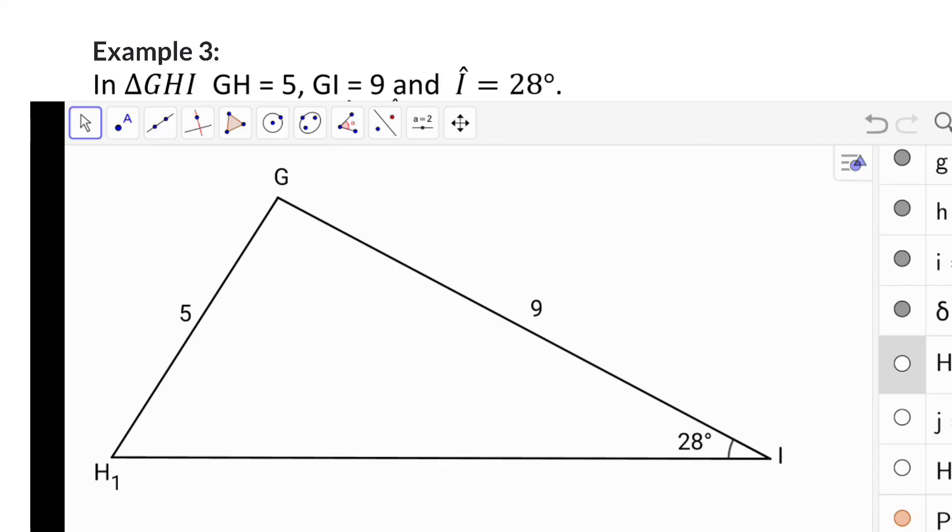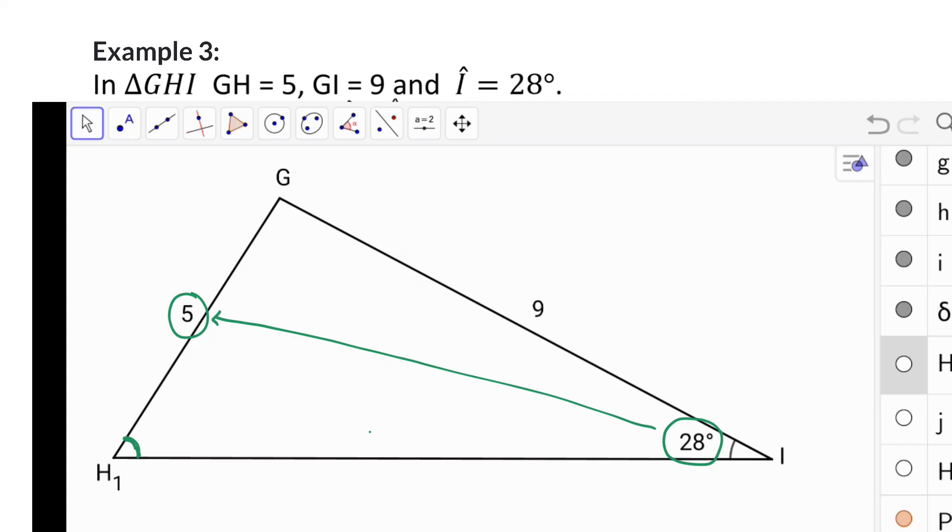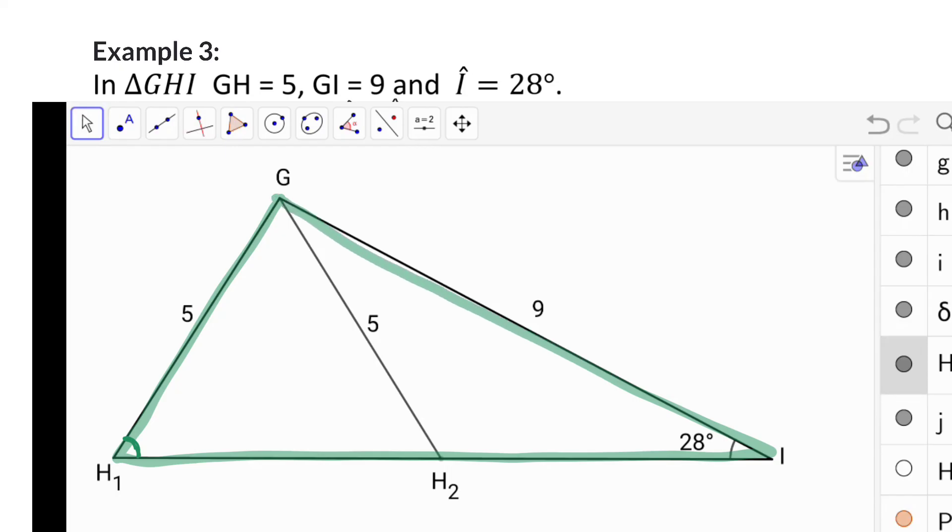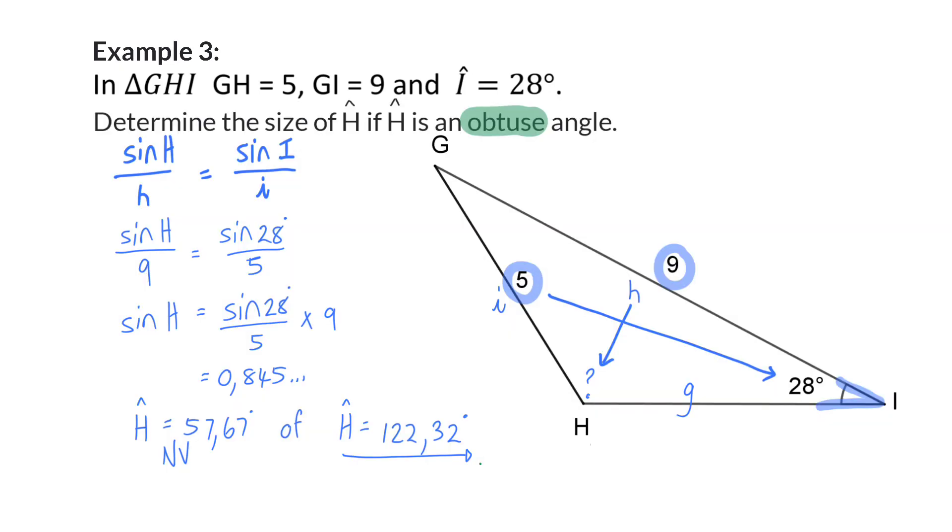Here we have a triangle with exactly the same dimensions as was given in example 3, but angle H is an acute angle. This possibility of two different angle sizes for H is only possible if the angle that is given is across from the shorter of the two sides that was given. When I move point H, you will see that side GH becomes shorter until it reaches a minimum and then it will start increasing again, and at some point it will be a length of 5 centimeters again. So here you can clearly see that it's possible to have two triangles, triangle GH₁I and triangle GH₂I, with exactly the same given information.